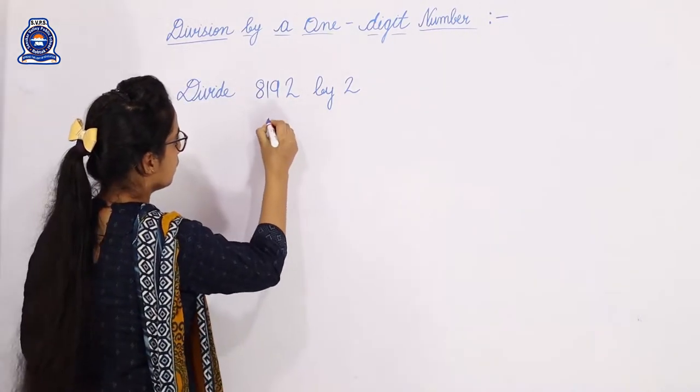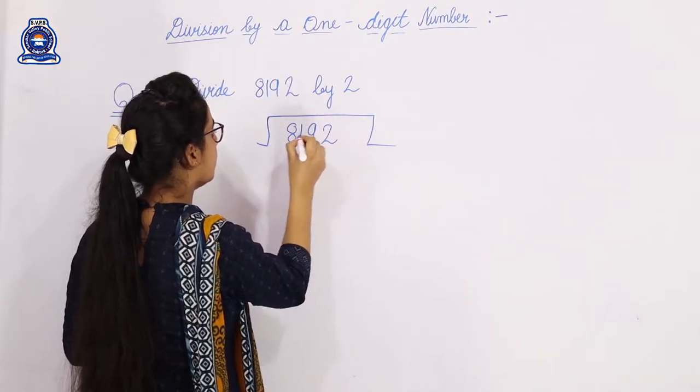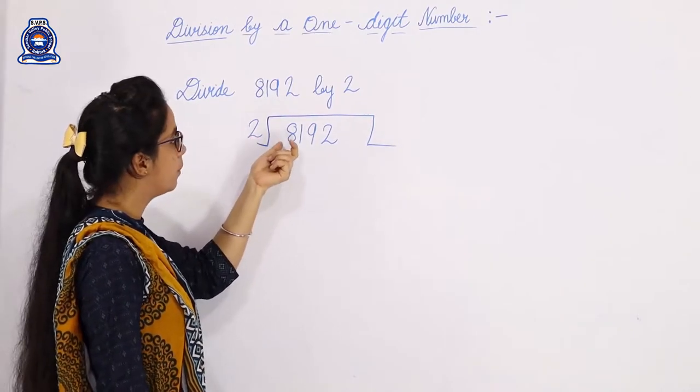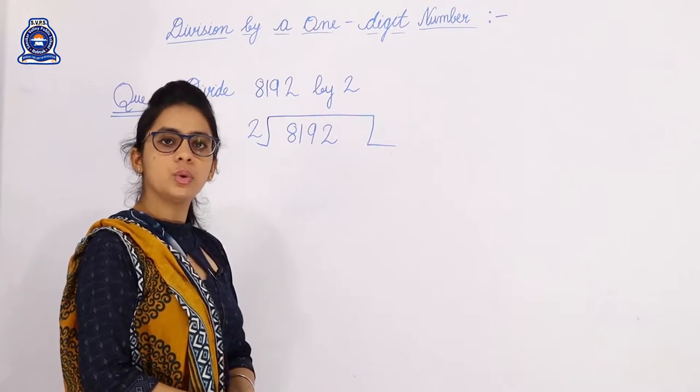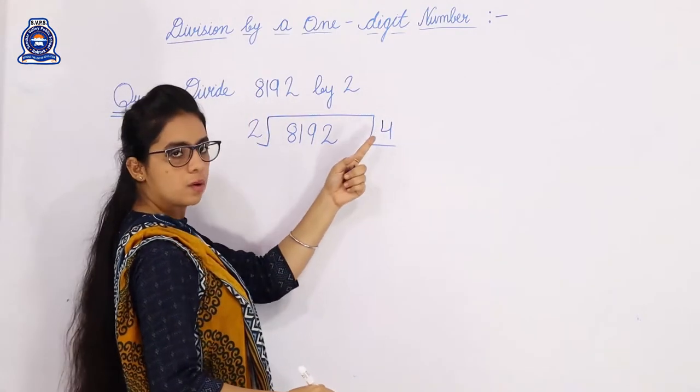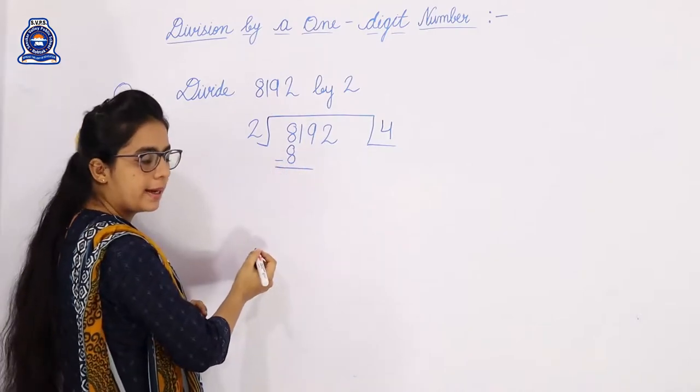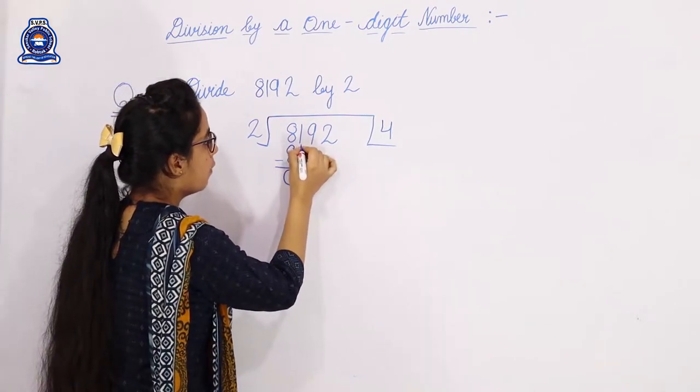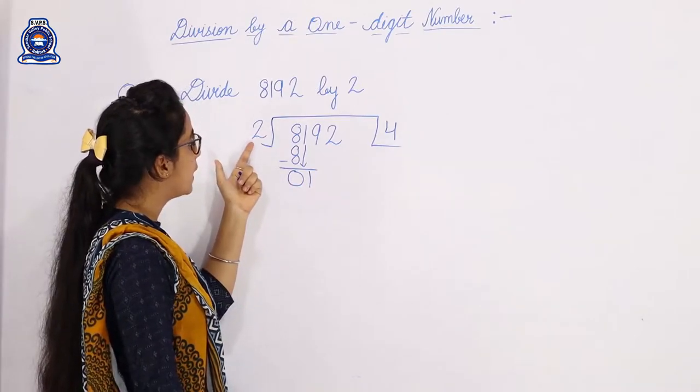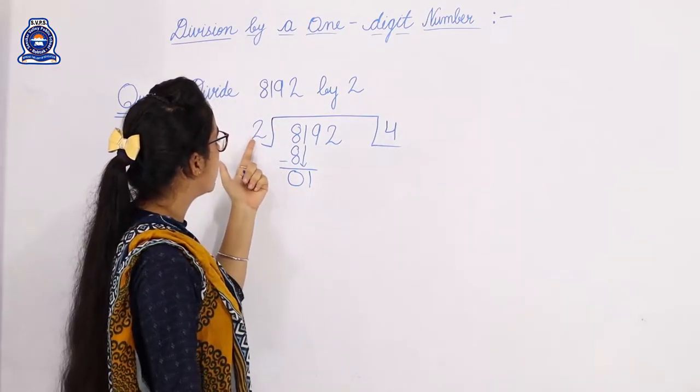So let's start the division. 8192 is our dividend and 2 is our divisor. First we use the 2's table up to 8. 2 ones are 2, 2 twos are 4, 2 threes are 6, 2 fours are 8. So we write 4 here. 2 fours are 8, and we write 8 here, then 8 minus 8 equals 0, and we carry the 1.